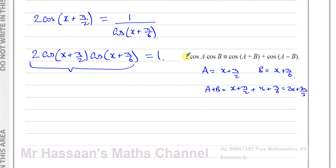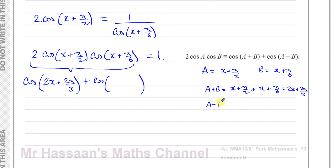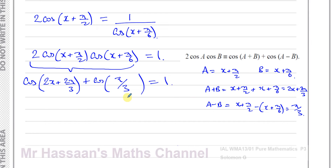The coefficient of 2 disappears when we apply the identity. Now computing A − B: (x + π/2) − (x + π/6) = π/2 − π/6 = 3π/6 − π/6 = 2π/6 = π/3. So the expression becomes cos(2x + 2π/3) + cos(π/3) = 1. Since cos(π/3) = cos(60°) = 1/2, we have cos(2x + 2π/3) + 1/2 = 1.